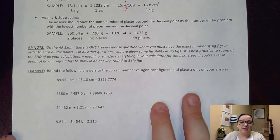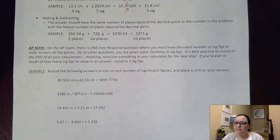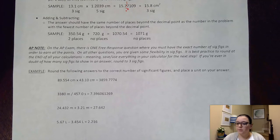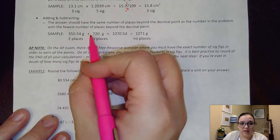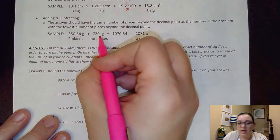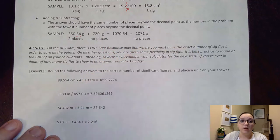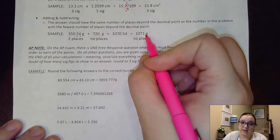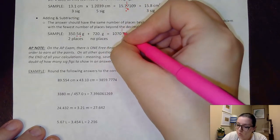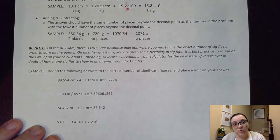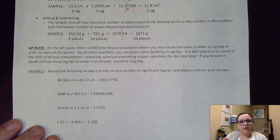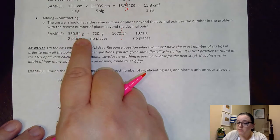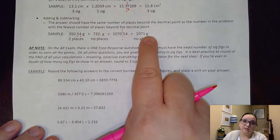The rule we don't use as much in pre-AP is the adding and subtracting rule. With adding and subtracting, rather than looking at the number of significant figures, we actually look at how many places are past the decimal. For example, these two numbers are getting added together — this number has two places past the decimal, whereas this one has no places past the decimal. So when I report my answer, I show no places past the decimal. I did look to see if that one digit beyond rounds up — it's five or more, so it would round up. That's why we put 1071. When adding and subtracting, units don't cancel — if I'm adding grams to grams, my answer is in grams.